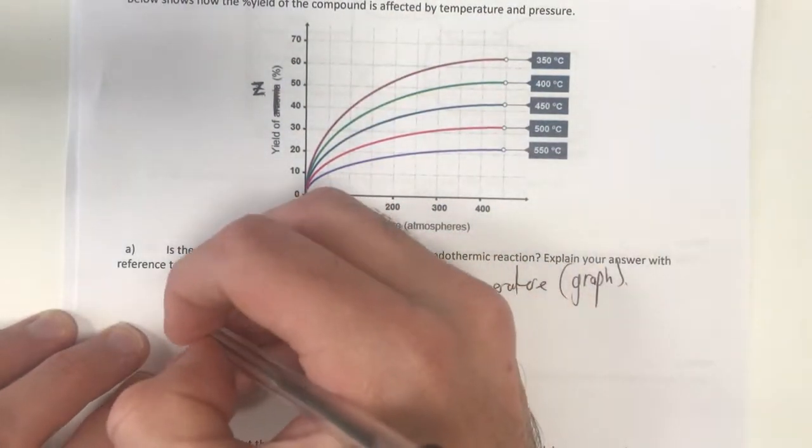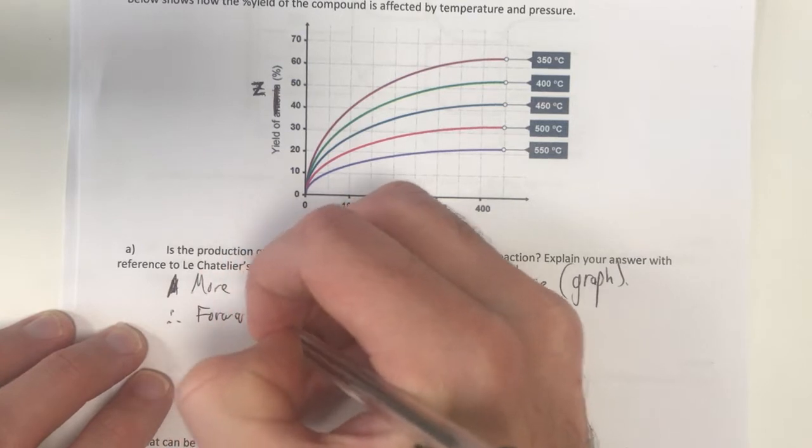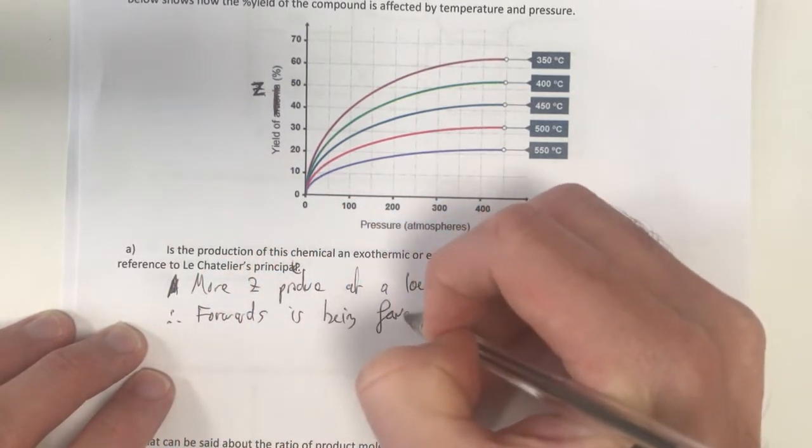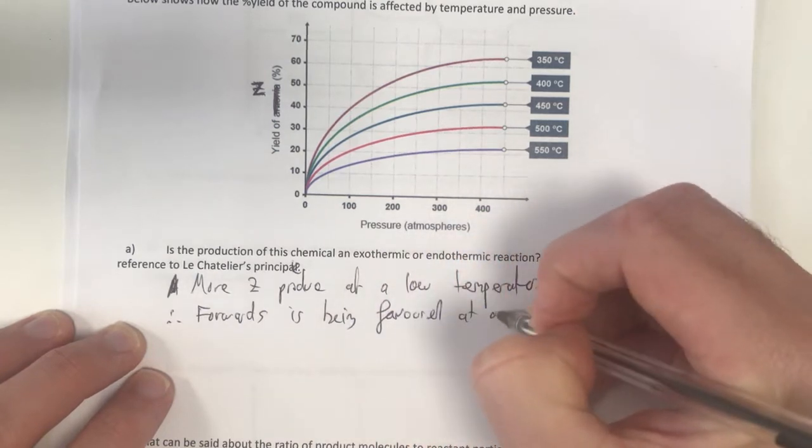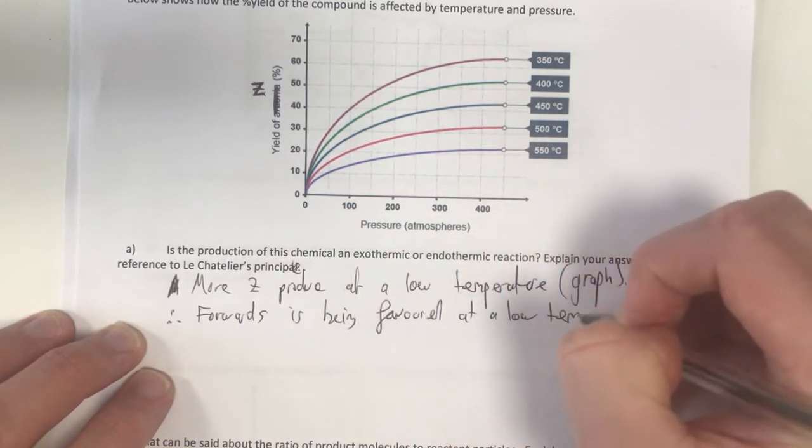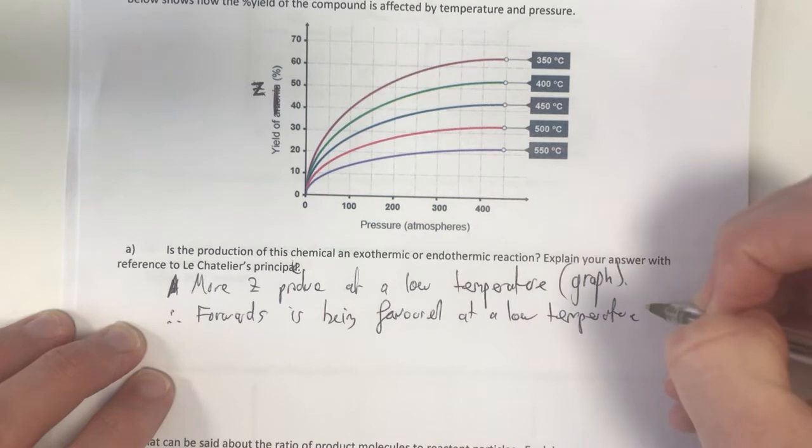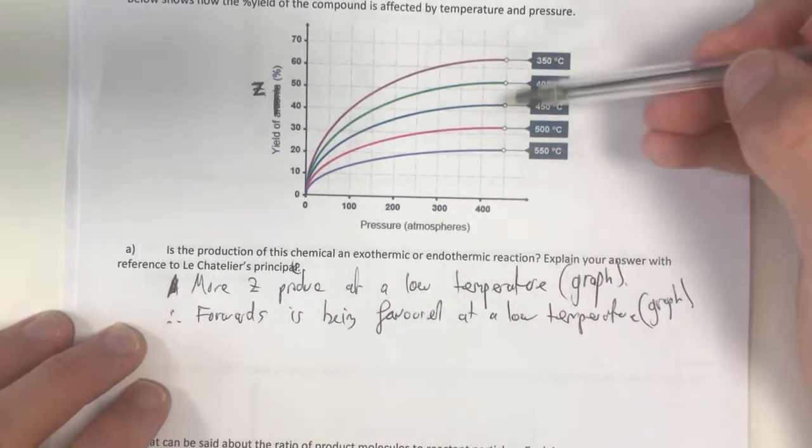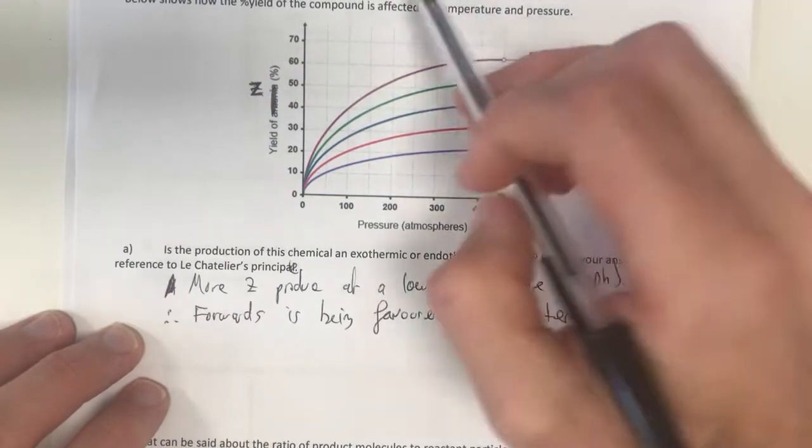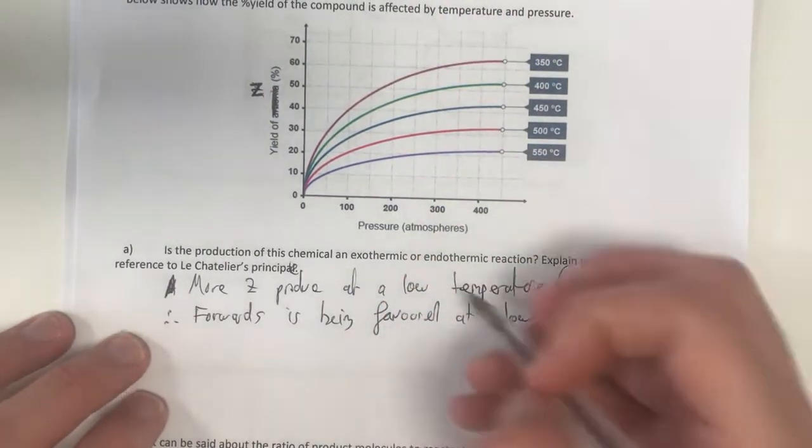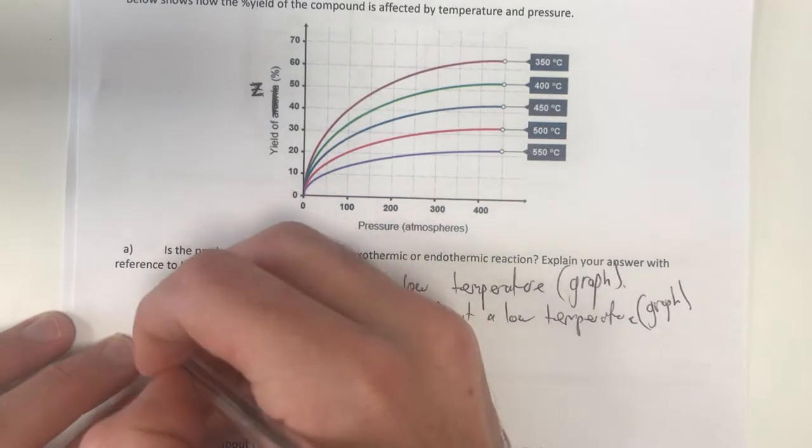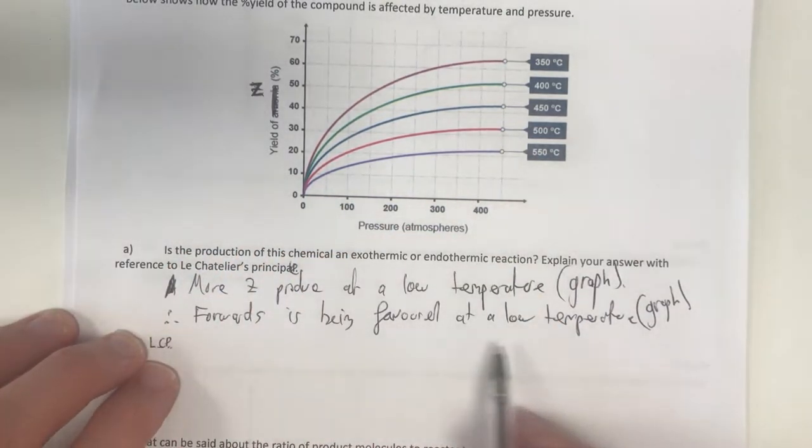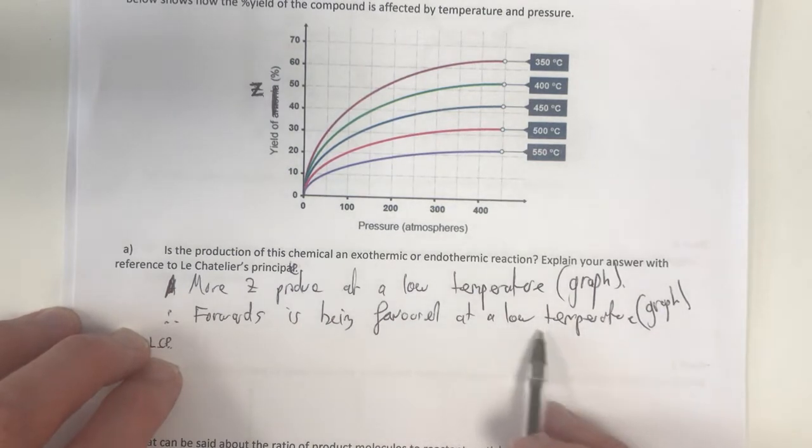What do we know? That means, therefore, the forward reaction is being favoured at a low temperature. That's from my graph as well. So if we have more z, that means my forward reaction is favoured at a low temperature.